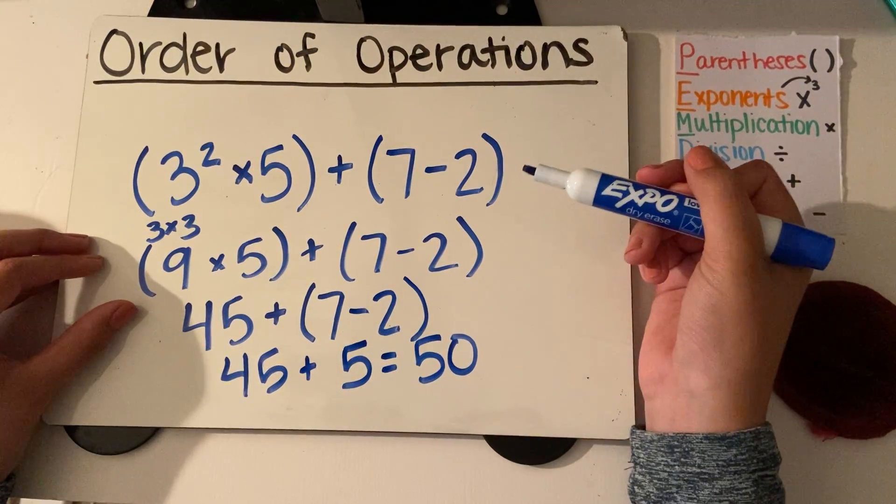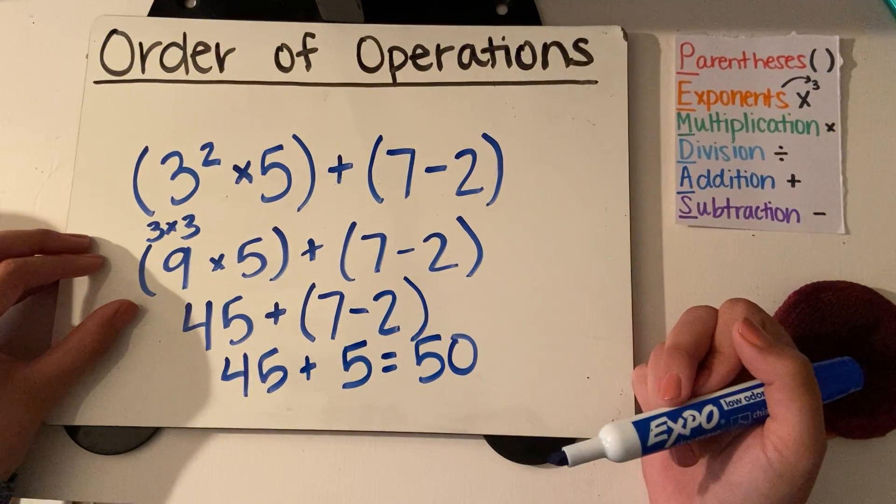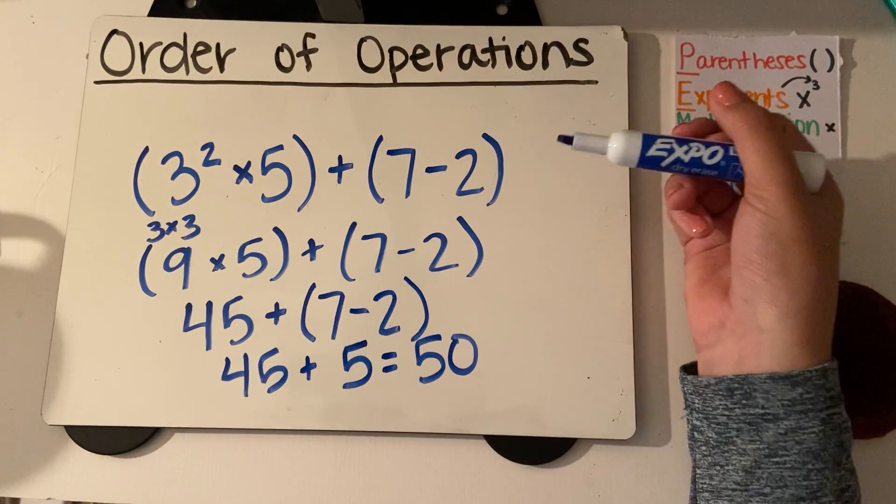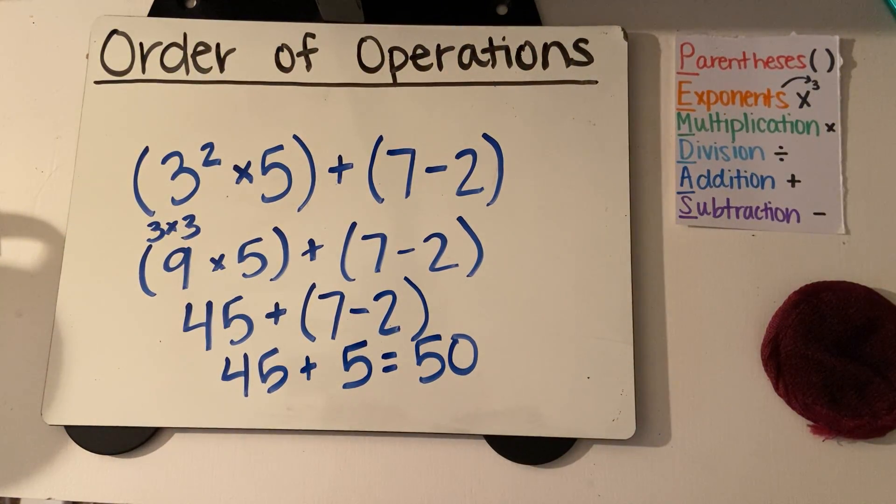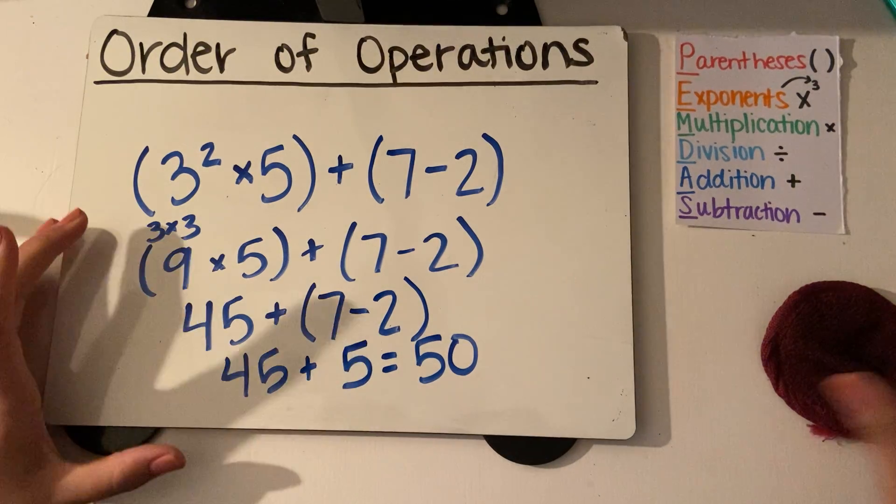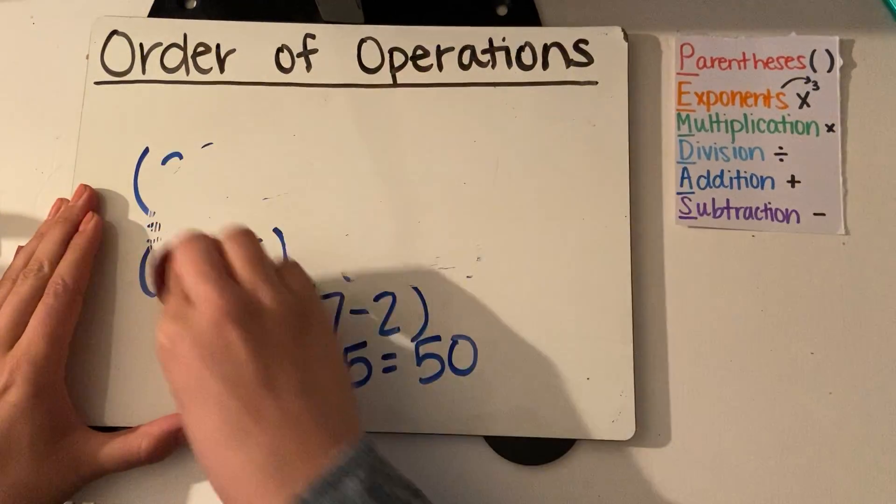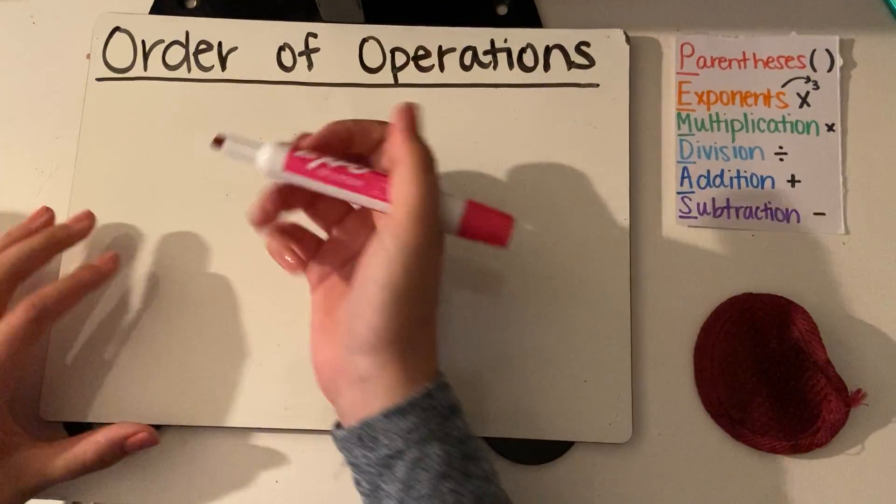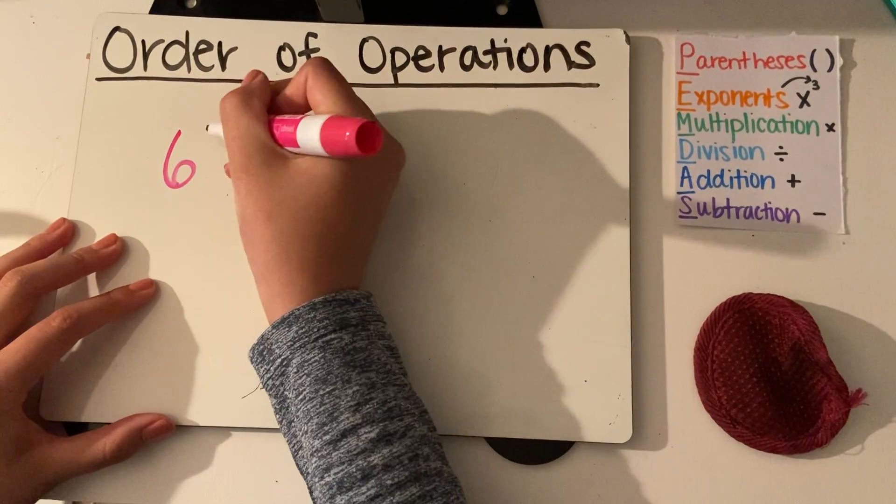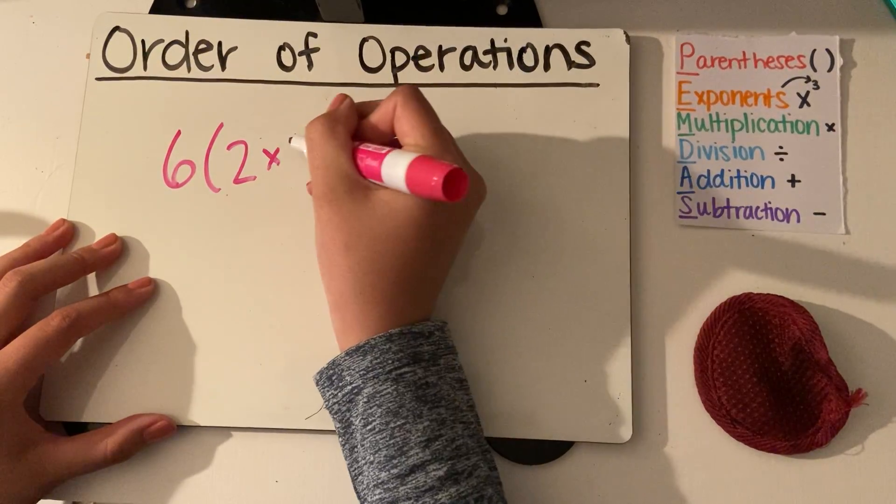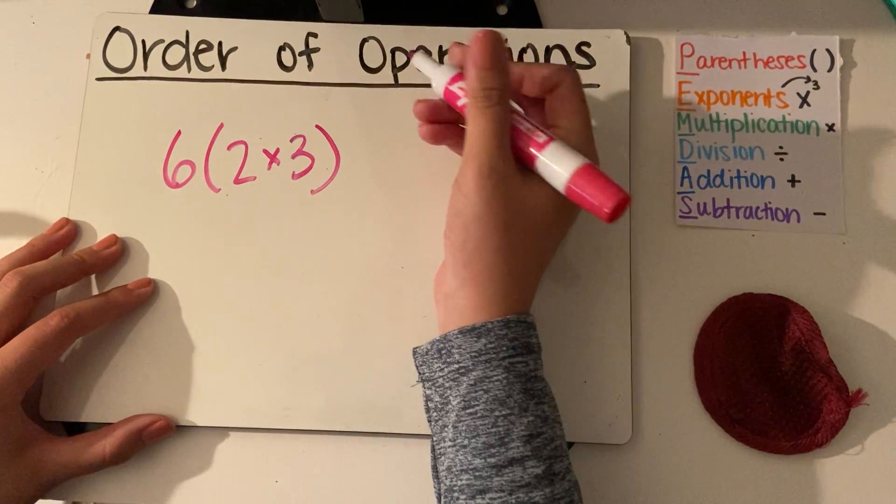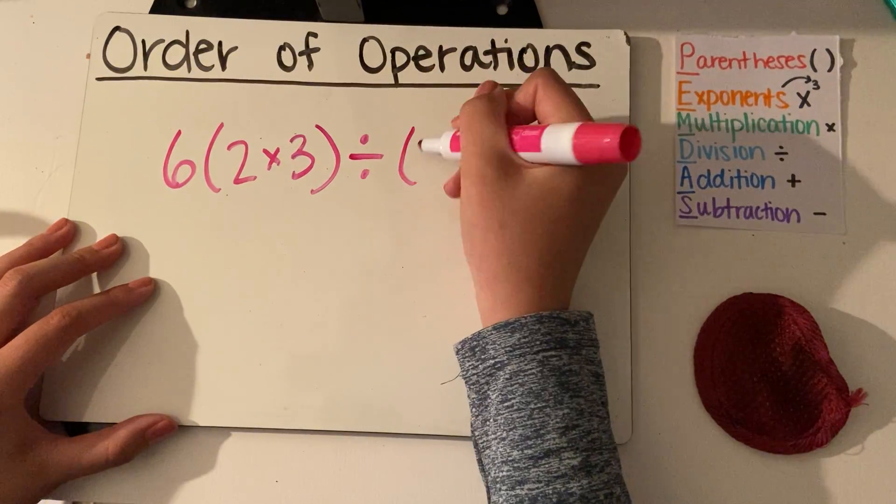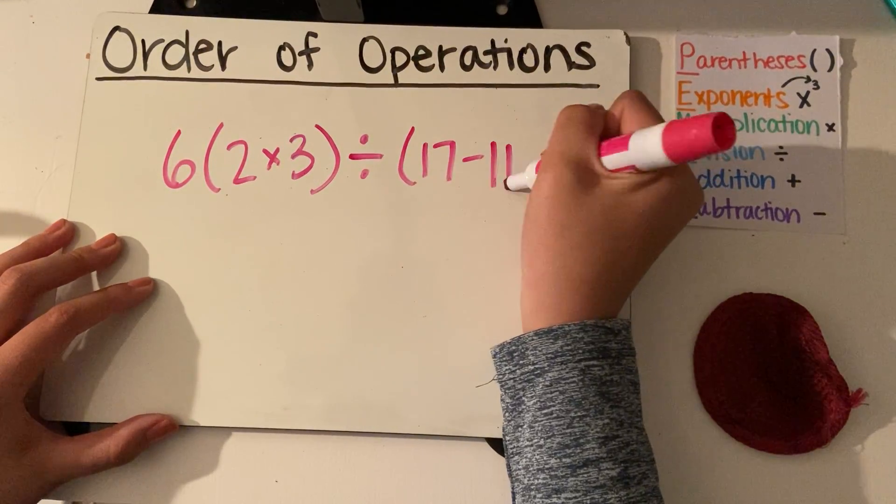So it's easiest if we break it down step by step, and we don't try to solve it all just in one step of a problem. We want to do multiple steps. So let's try another one together. Let's do 6 times 2 times 3 divided by 17 minus 11.